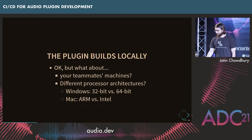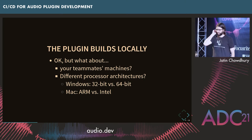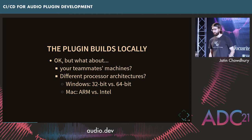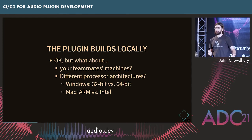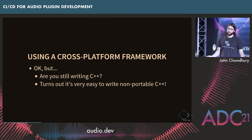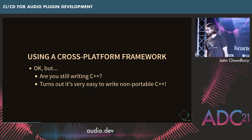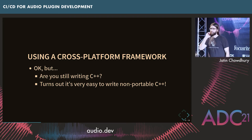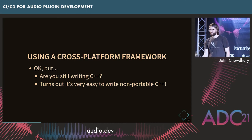This is a tricky thing when developing plugins, because even if your project builds locally, maybe you have a teammate on a different type of machine and it doesn't work for them. Or maybe you're trying to build for different processor architectures and you're not sure if your plugin will build across them. That can be a big problem these days, especially with ARM Macs if you're trying to support both types. And if you're writing C++, it's very easy to write non-portable code.